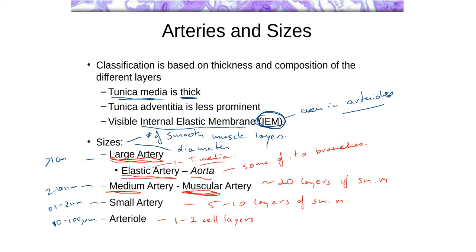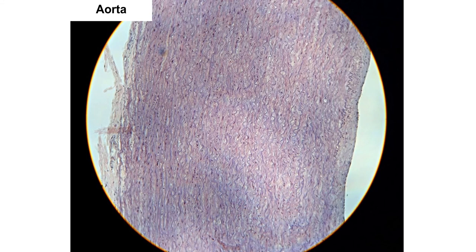Here is a low-power micrograph of the aorta — the lowest magnification available on this microscope. The lumen is on the right-hand side. What you have is this kind of wavy band showing up in this area — if you follow this all the way, this is the internal elastic membrane.